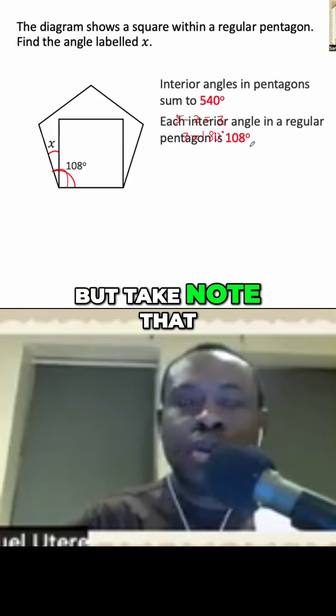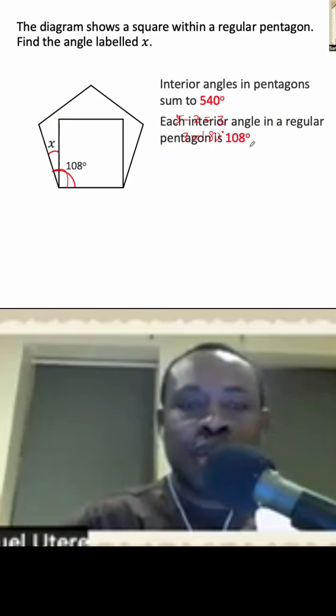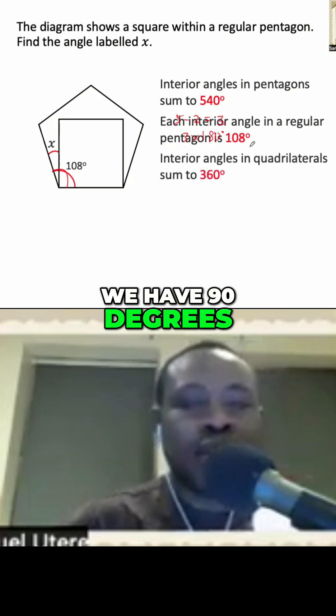But take note that we have a square. And in that square, we have 90 degrees.